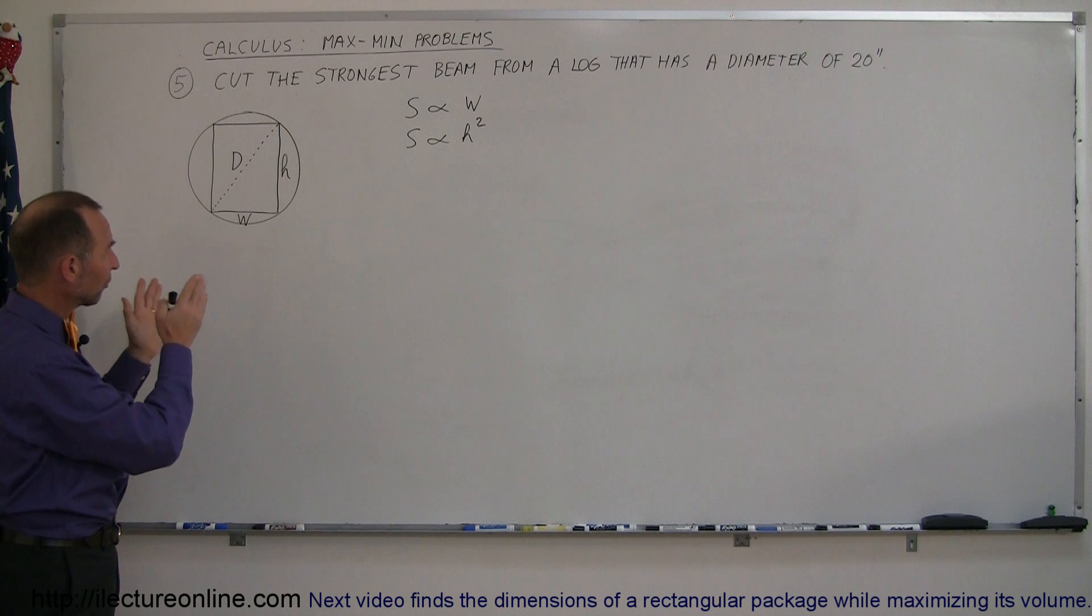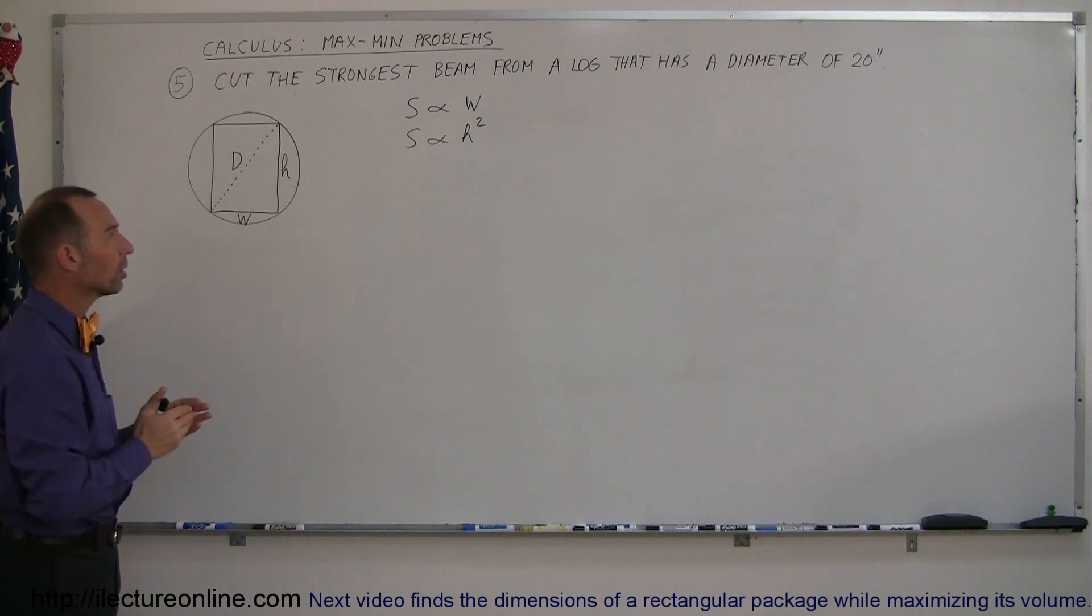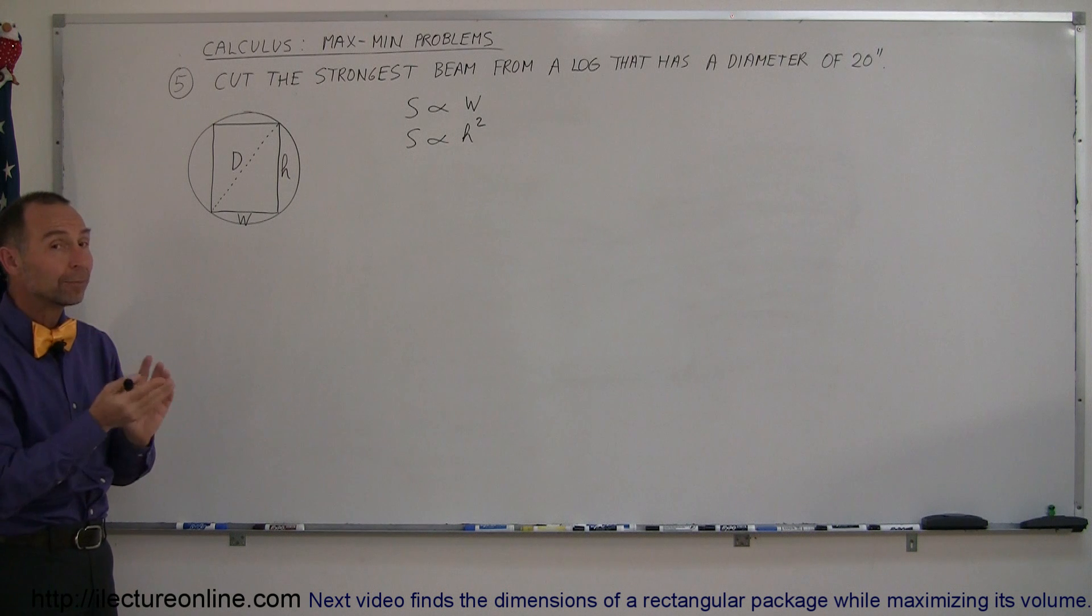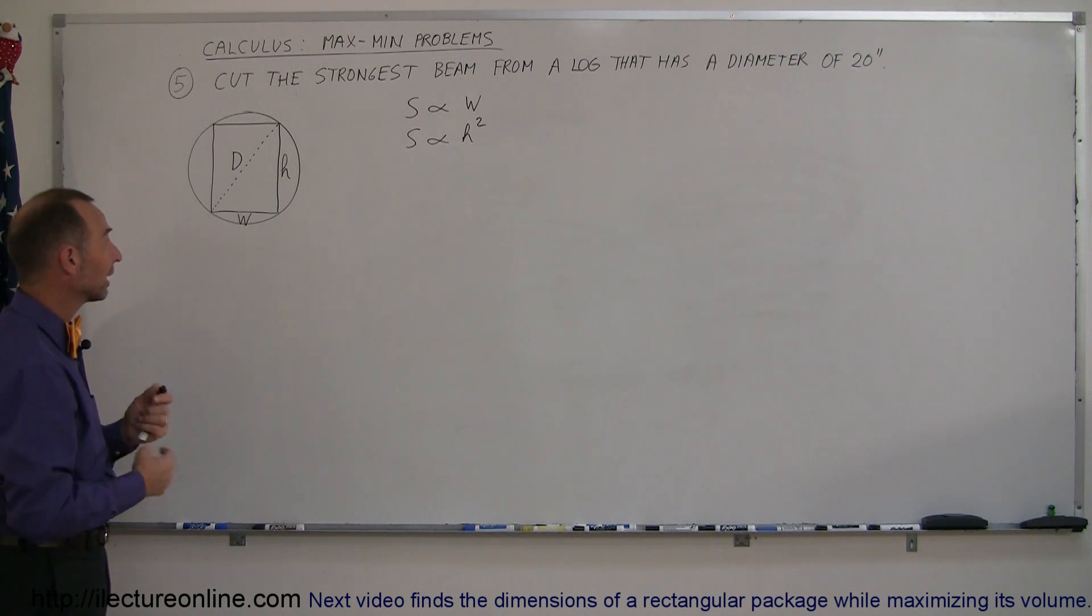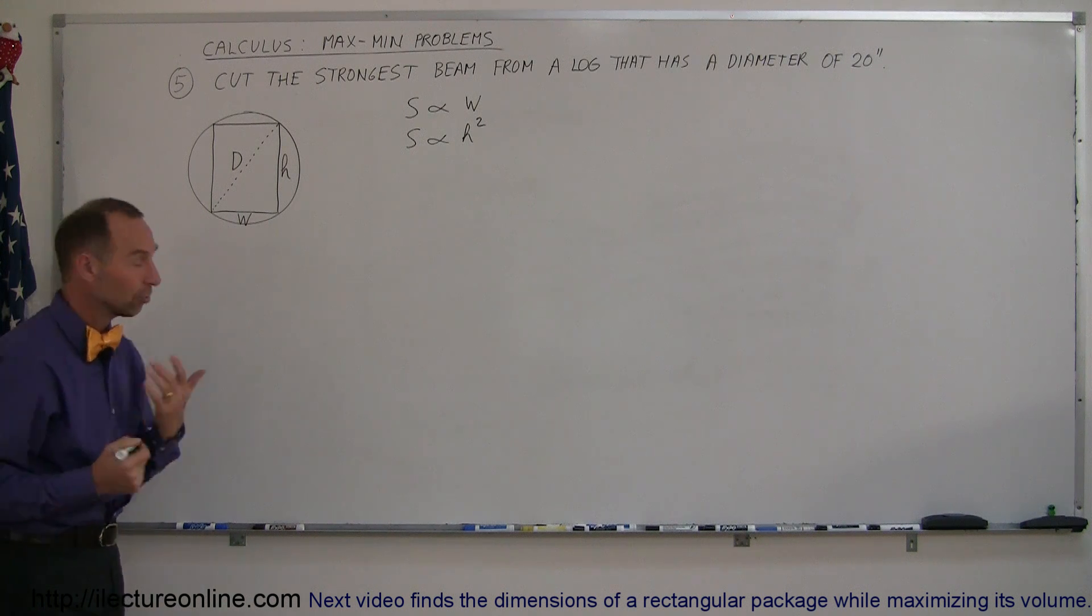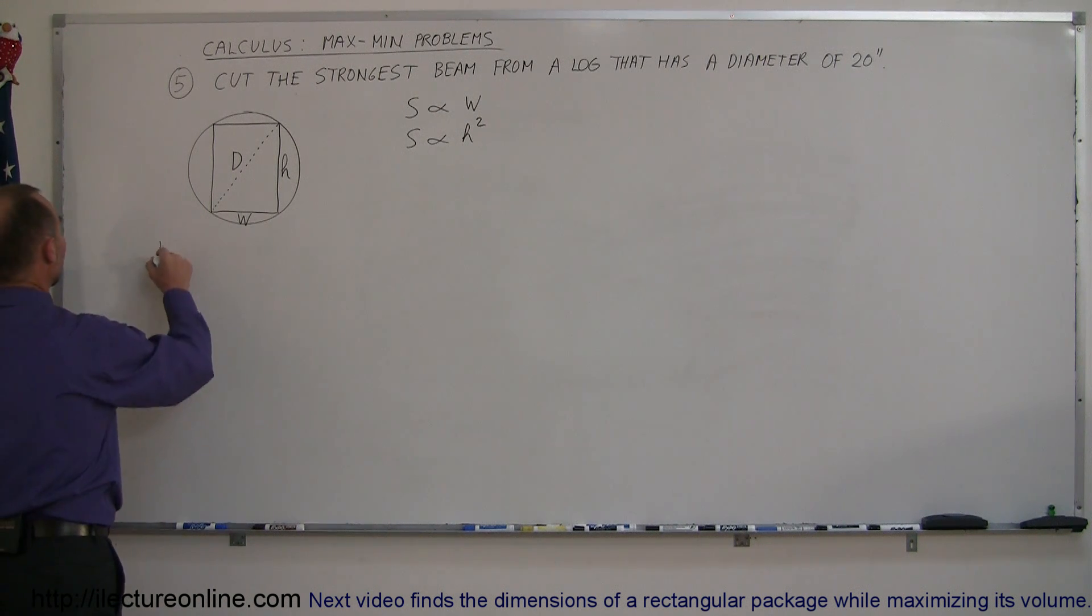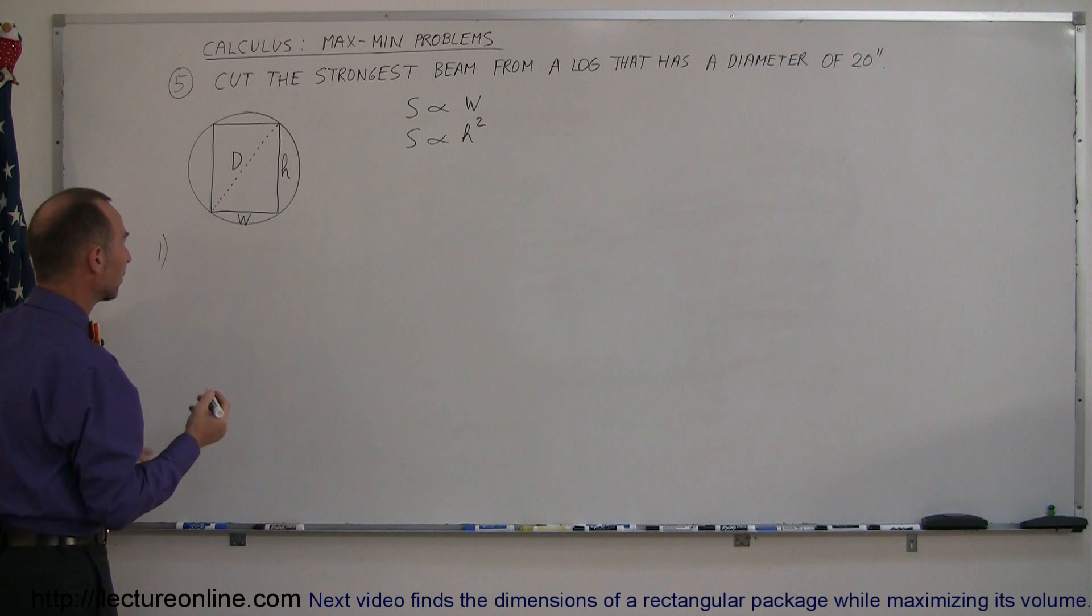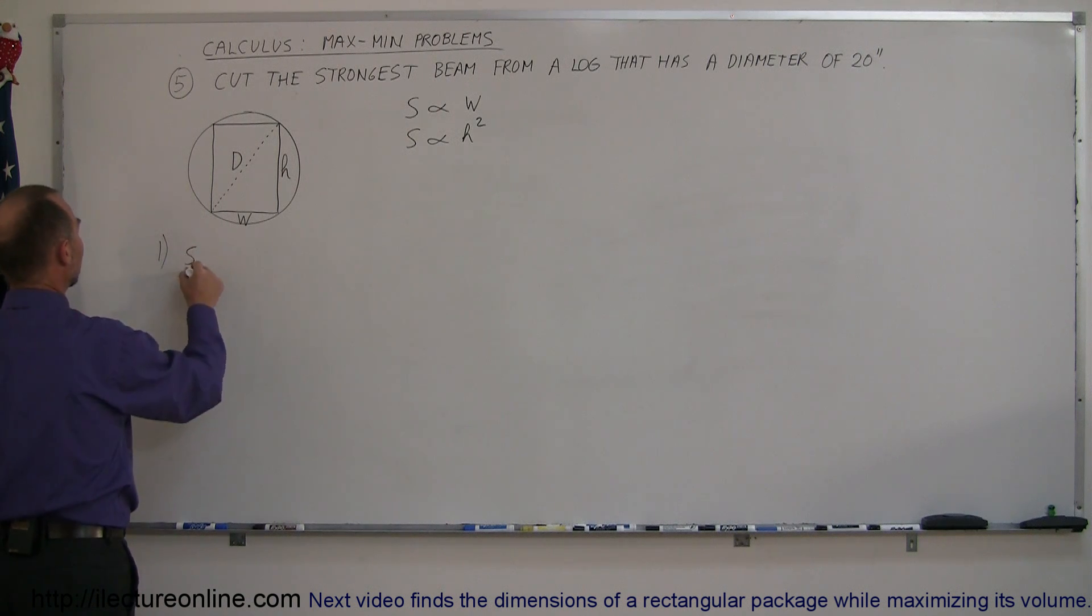But of course there's a limit as to how you can cut a beam out of a log. So given that a log has the diameter of 20 inches, what would be the right proportions of the height and the width to get the beam to be the strongest possible? So how do we do that? Step number one: we determine what we're trying to maximize or minimize. In this case we're trying to maximize the strength, so S_max is what we're looking for. So always determine that first.